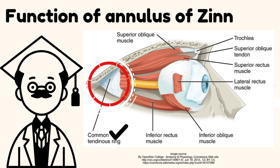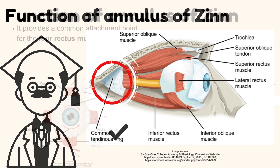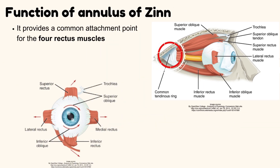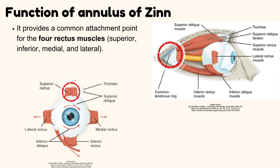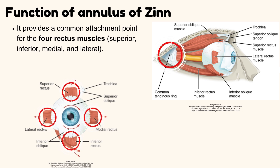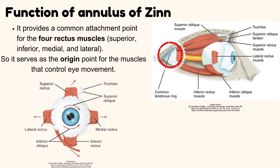Function of the Annulus of Zinn. It provides a common attachment point for the rectus muscles — superior, inferior, medial, and lateral. Thus, it serves as the origin point for the muscles that control eye movement.